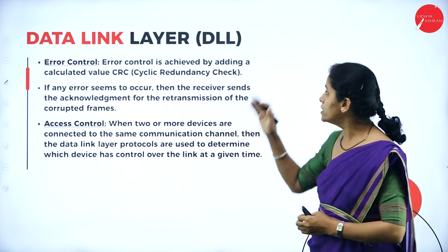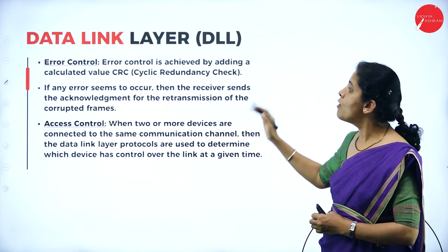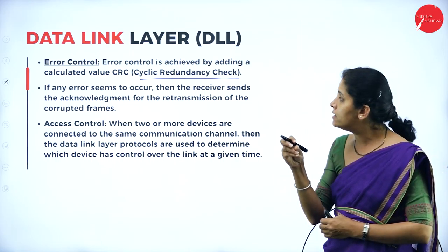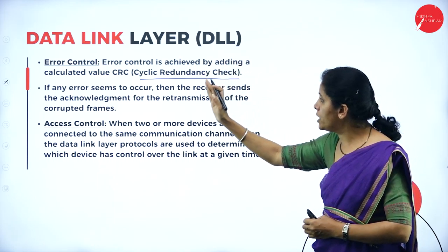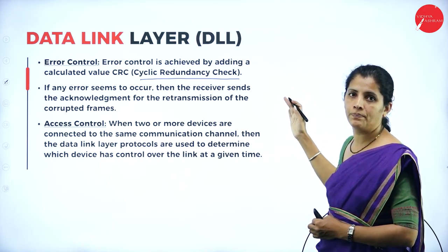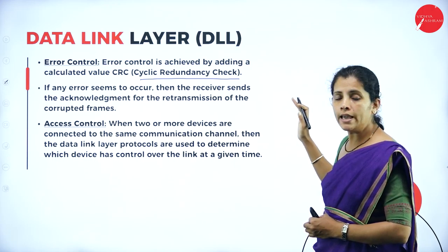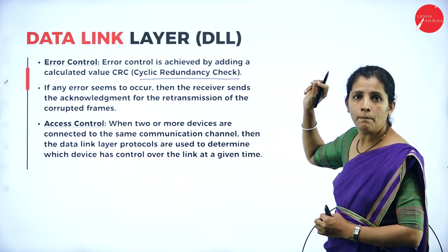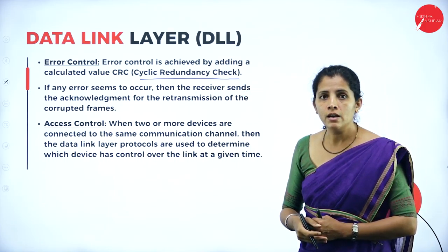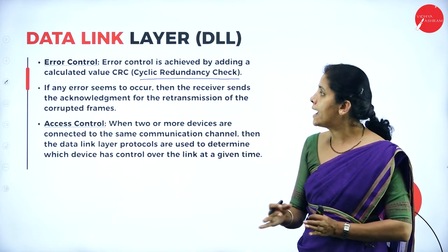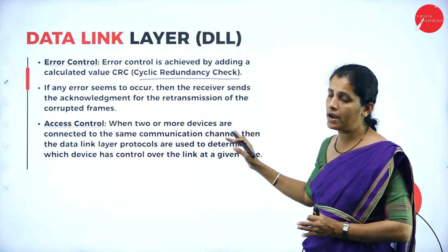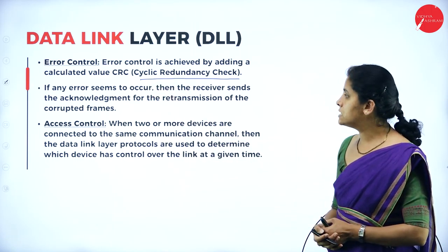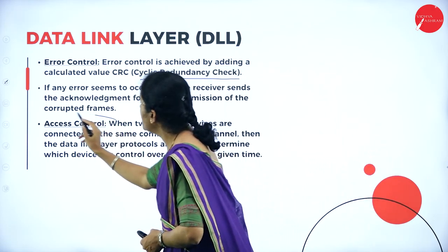The data link layer is also responsible for error control. Before sending any frame, the CRC (Cyclic Redundancy Check) value is calculated and appended to the frame. At the recipient side, the receiver extracts the frame and checks the CRC value. If the same CRC value is obtained, the data has not been altered or modified. Error control manages errors using the cyclic redundancy check.